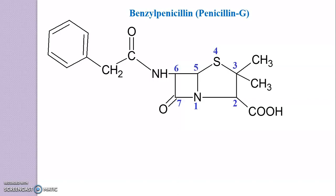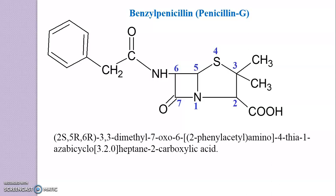Isn't it easy? Now, you have to remember the IUPAC nomenclature. For this, the carbon numbers 2nd, 5th, and 6th are the chiral carbons. So, you have to write 2S, 5R, and 6R. Then, to the 3rd carbon, there is an attachment of a methyl group, so you have to write 3,3-dimethyl. Then, 7-oxo.